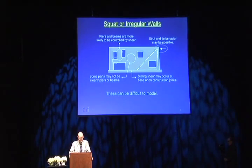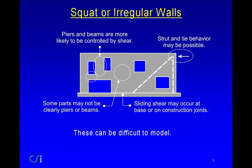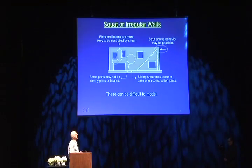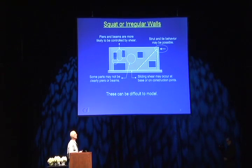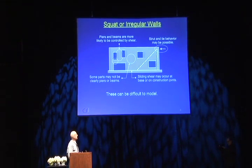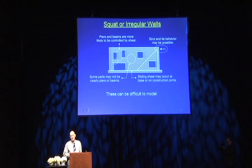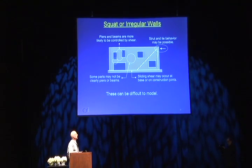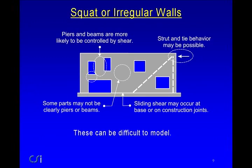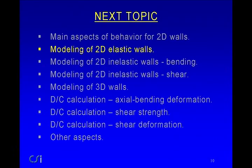For squat or irregular walls — I'm not going to spend much time on this because they tend to be a lot more complex. Piers and beams are more likely to be non-slender and controlled by shear. In a situation with lateral load, it's possible for a tension tie to develop with sufficient vertical reinforcement coupled with a compression diagonal, developing strut-and-tie or truss behavior, which can dramatically strengthen the beam. It's also possible to get sliding shear along the construction joint or along the base of the structure, and these things can be rather difficult to model.